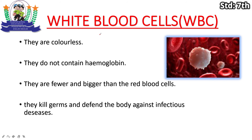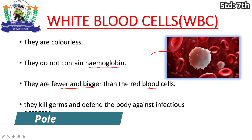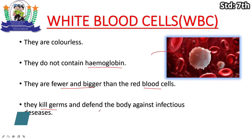Now let's look at white blood cells. As you can see, white blood cells have no particular color. They are fewer in number but bigger in size compared to red blood cells. Their function is to kill germs and defend the body against infectious disease.